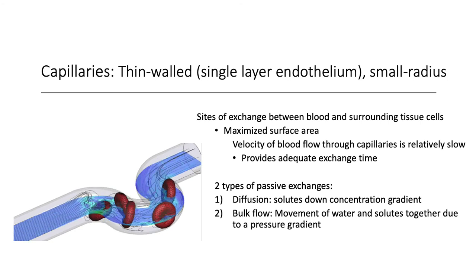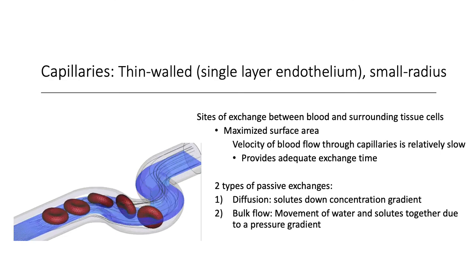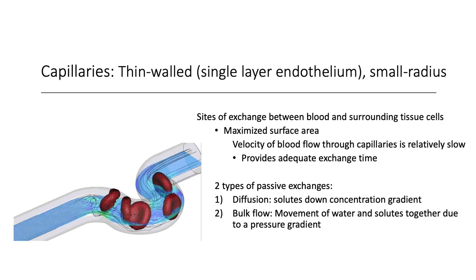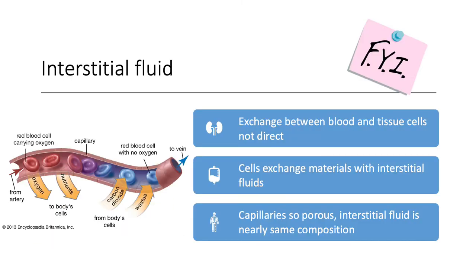Capillaries branch to bring blood within reach of every cell of the body. There are two types of passive exchange: diffusion — solutes moving down their concentration gradients, including fluids, gases, nutrients, and wastes — and bulk flow, the movement of water and solutes together due to a pressure gradient. Remember that exchange between blood and tissue cells is not direct; there's an intermediary, the interstitial fluid (ISF). The capillaries are so porous that the ISF is nearly the same composition, though it is an important intermediary step.